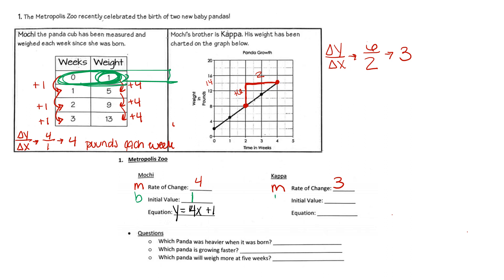For Kappa's initial value, we look at where the graph starts. The graph starts between zero and four, which puts us at two. Using those two pieces of information, we write our equation in slope-intercept form: y equals three x plus two.